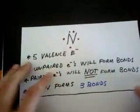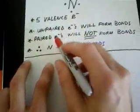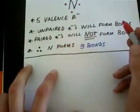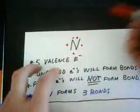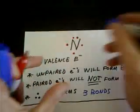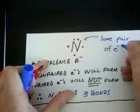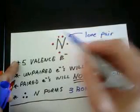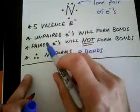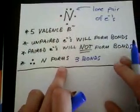So the basic idea here is that the unpaired valence electrons will form bonds, but the paired valence electrons will not form bonds. So in here, we have this pair here, and we actually call that a lone pair of electrons. So we have three unpaired electrons and one lone pair, a total of five valence electrons. So if the paired electrons will not form bonds and the unpaired electrons will form bonds, then we can conclude that based on this structure here, nitrogen will form three bonds.